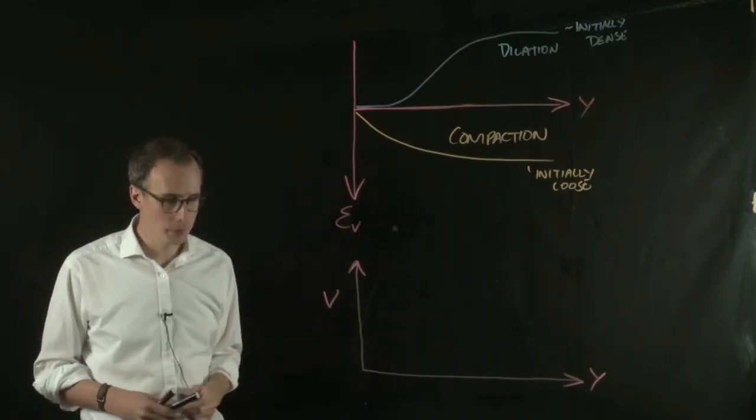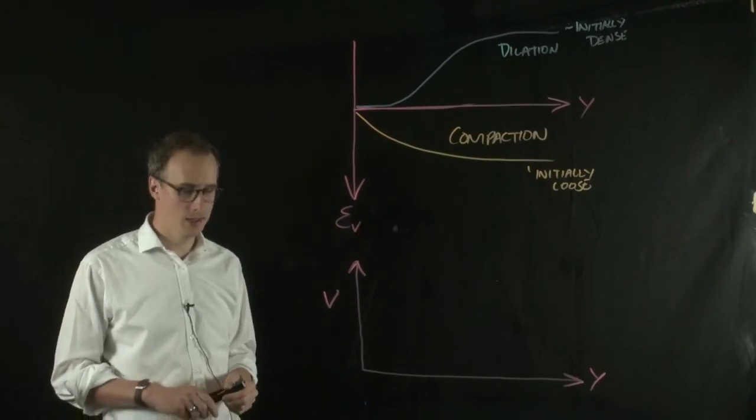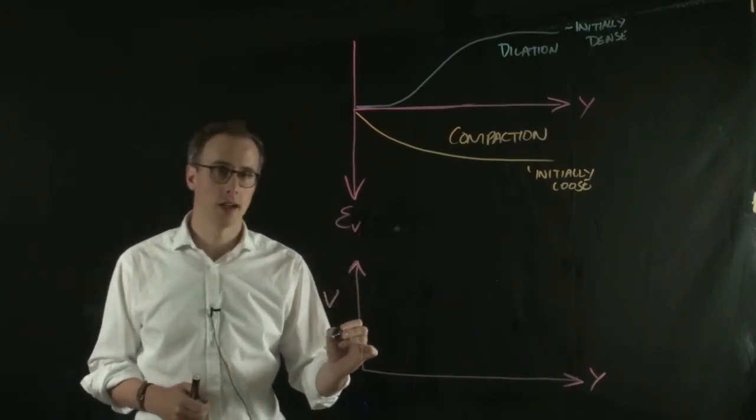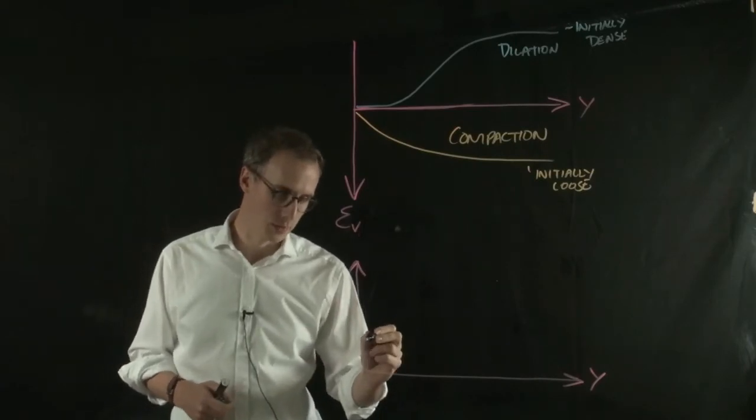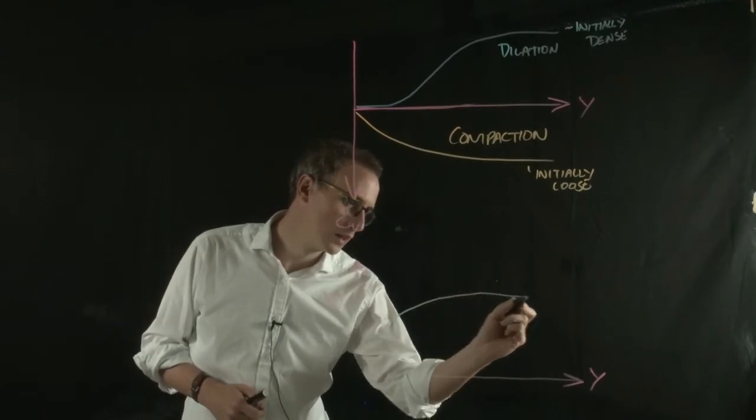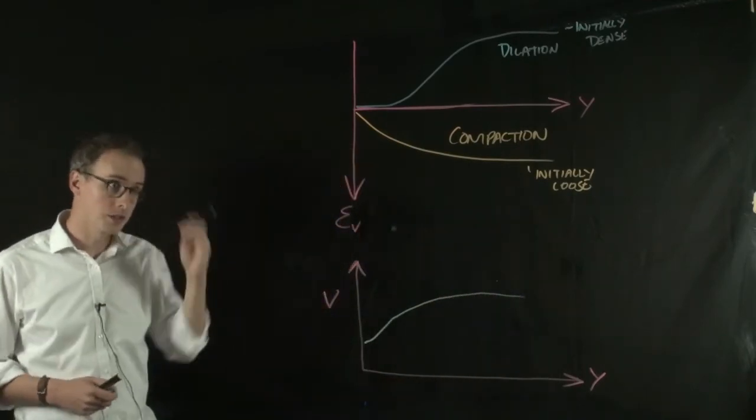But if we plot these graphs, we can see that an initially dense material will increase its specific volume, so it will dilate, and it will dilate until it reaches a certain level.